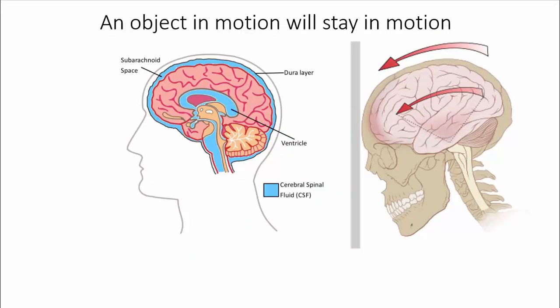If you or anyone you know has ever gotten a concussion, that was due to Newton's first law. Your brain actually floats around inside of a little bit of liquid inside your skull. And so your brain isn't actually attached. It's kind of free floating and it acts like a shock absorber. If something were to happen and you were to hit your head really hard, an object in motion is going to stay in motion.